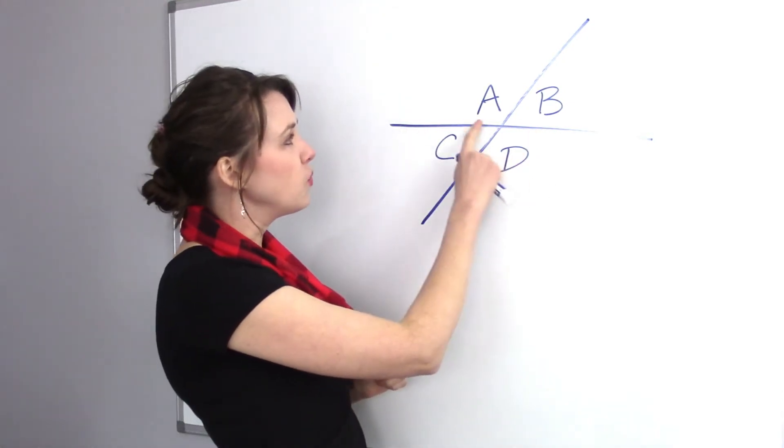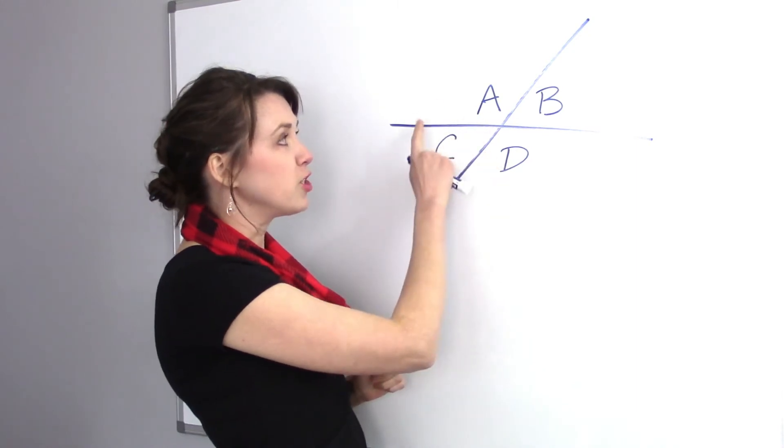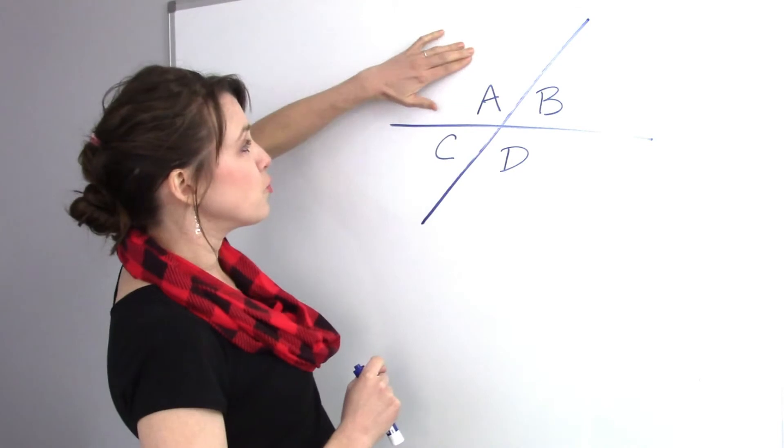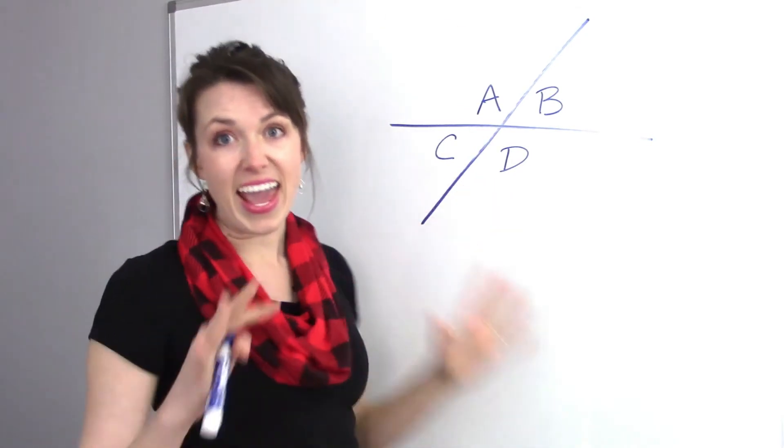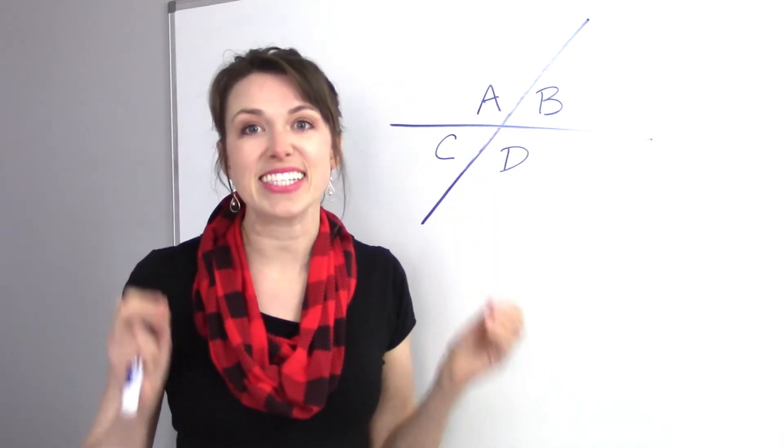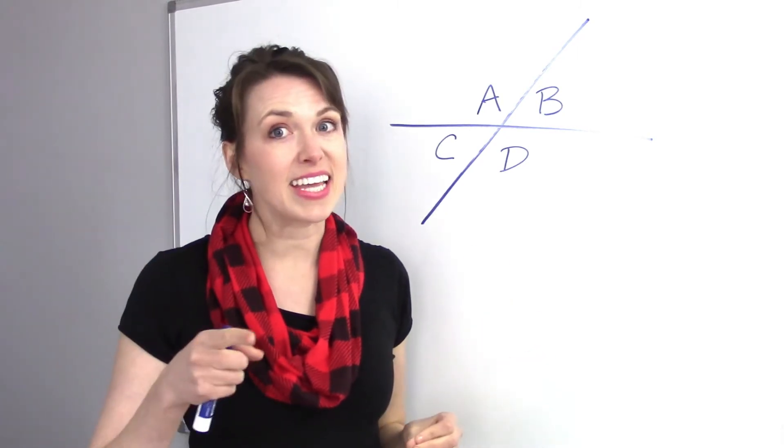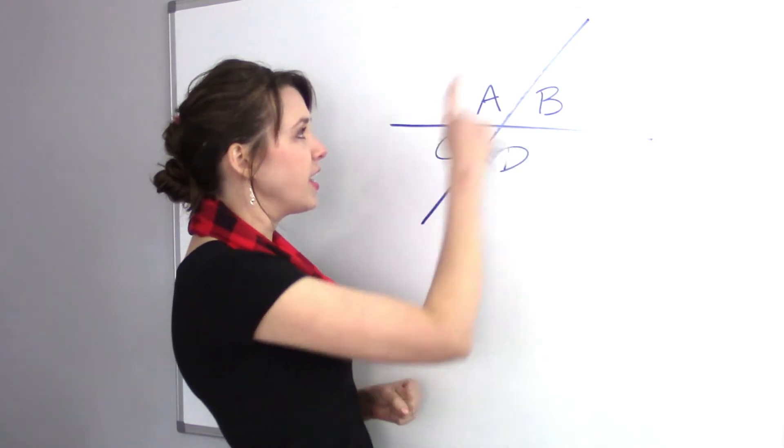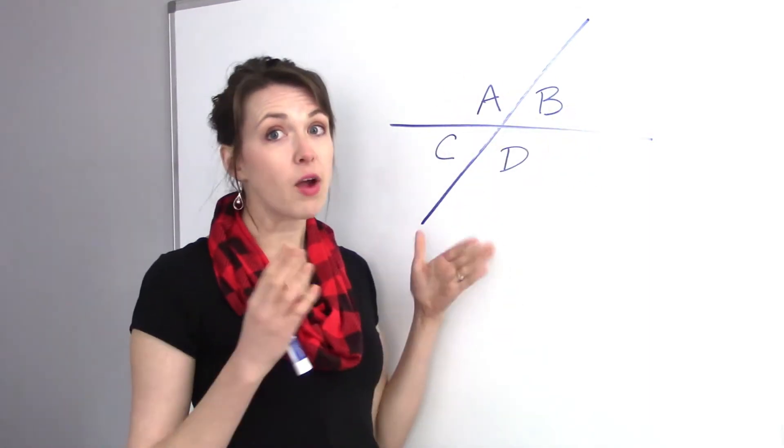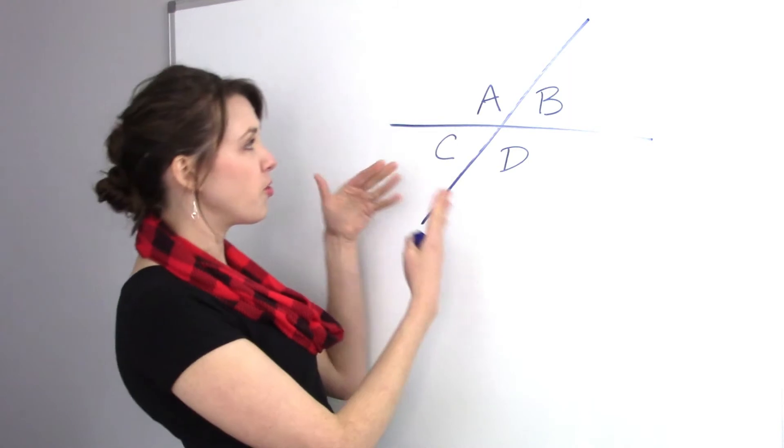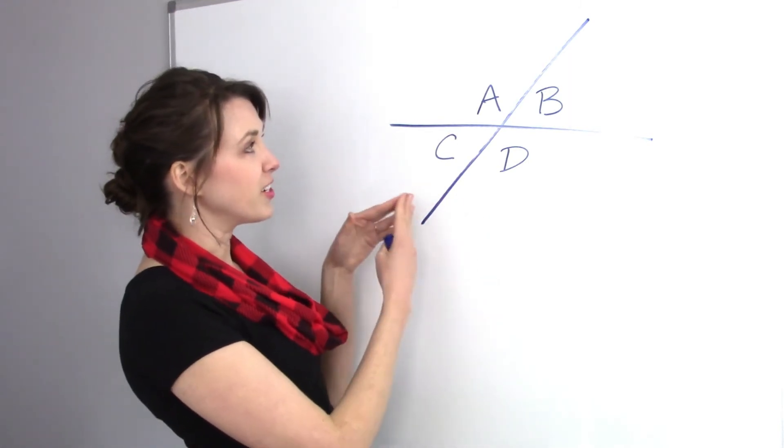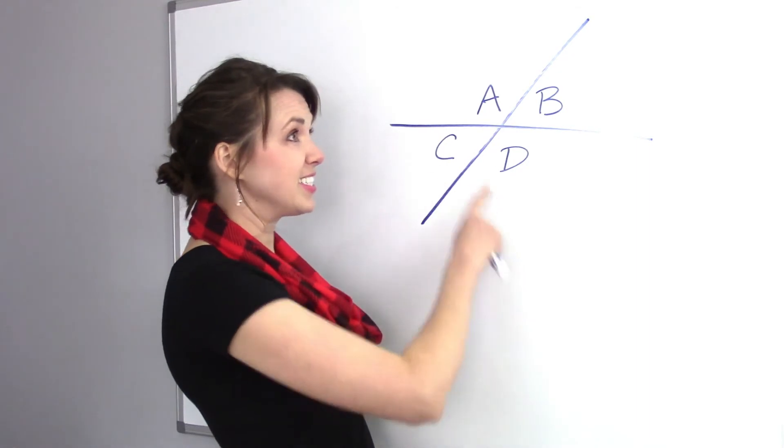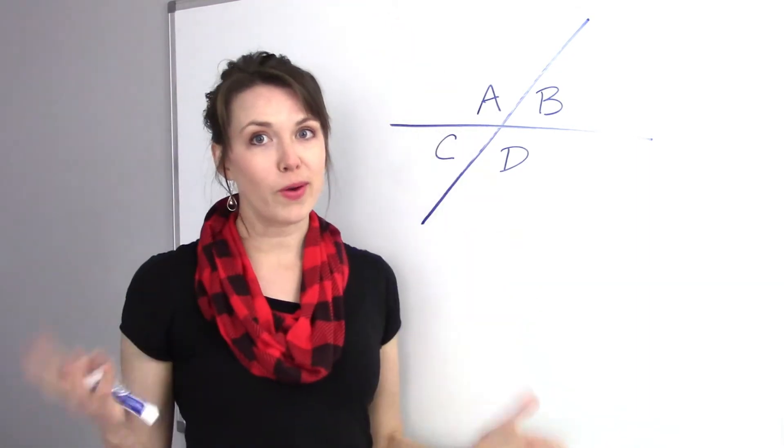But before we get into that, notice here how we have A, which A is clearly an obtuse angle. And if you look directly across from A, we have D. And A and D are going to have the exact same angle because in this case they're both obtuse. And the same goes with C and B. They are both going to be acute angles. They're both a little bit smaller. And if we were to add A, B, C, and D all together, what would we get?